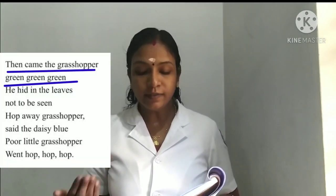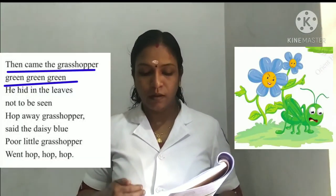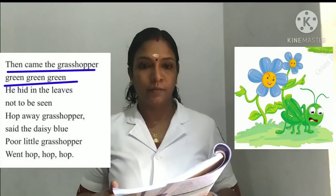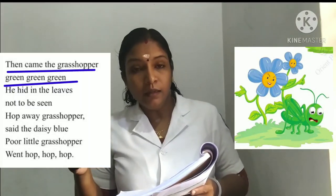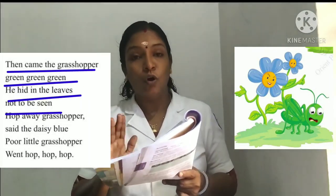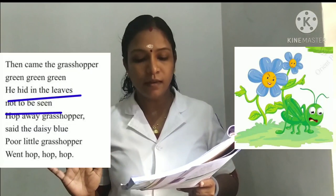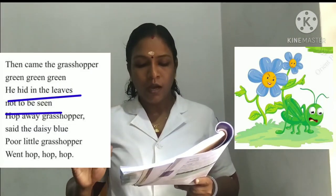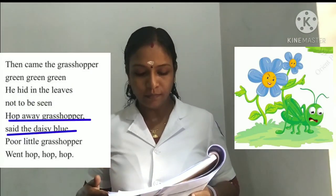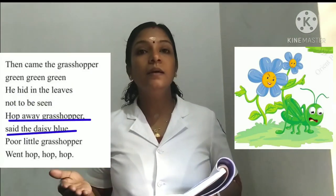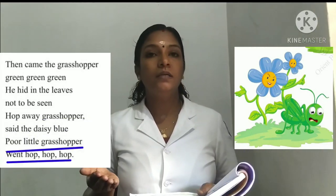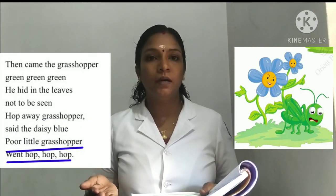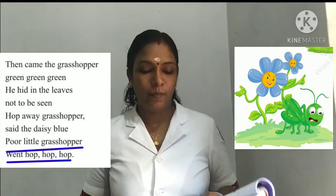Then came the grasshopper — green, green, green. He hid in the leaves, not to be seen. Hop away, grasshopper, said the daisy blue. Poor little grasshopper — hop, hop, hop.